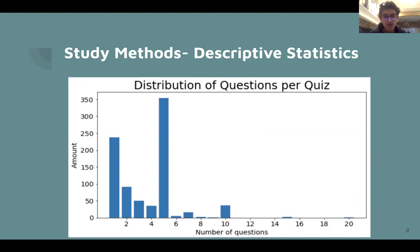Here's a distribution of the number of questions per quiz. As you can see, there is a pretty big peak at five. That's because the default option for the number of questions on a quiz is five, but you can see that quite a few students, in fact the majority of students, had five or fewer questions on their quiz.